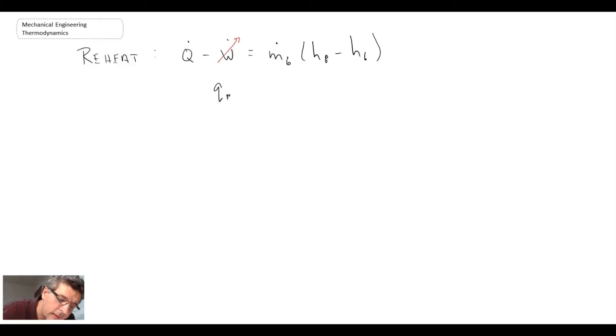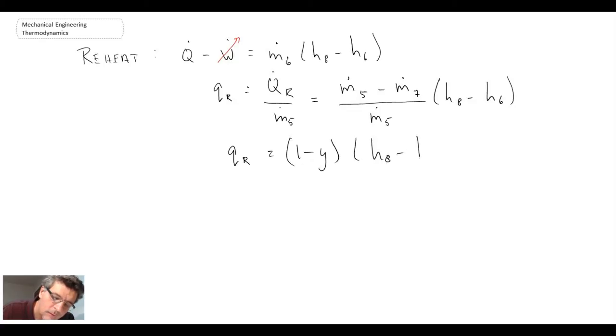There is no work done in the reheat. So on a per unit mass, we divide by M5. We then use the continuity equation to come up with an expression for M6, just like we did before. So with that, we get the heat into the reheat boiler. Kilojoules per kilogram through the boiler.